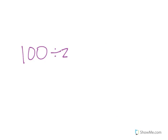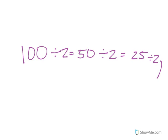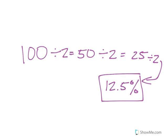100 divided by 2 is 50. That divided by 2 is 25. Divide that by 2 again and you finally get 12.5. Since this was a percentage, that's what we're trying to find. Our final answer is that 12.5% of the sample would be left after 99 seconds of elapsed time.